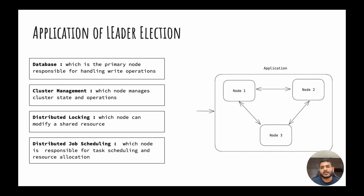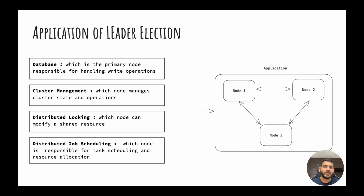If my application requires a shared resource to be accessed and only one node should be able to access that particular resource, then we can also use the leader election process to identify that node. The last example is if my application runs a lot of jobs — we can run the leader election process, identify the node responsible for scheduling work onto all the nodes, and then all other follower nodes will execute those assigned jobs.